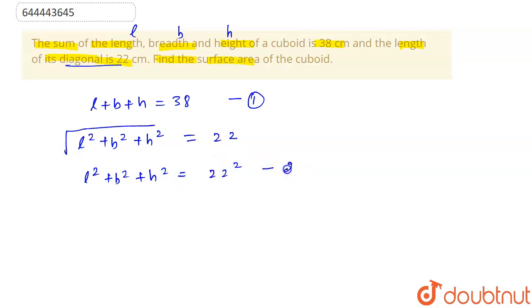Let us see this is information number 2. Now let us take L plus B plus H whole square. If we expand this, it will become L square plus B square plus H square plus 2 into LB, BH plus HL.